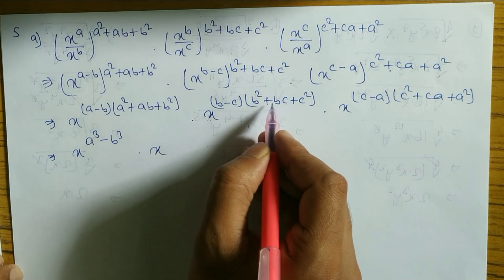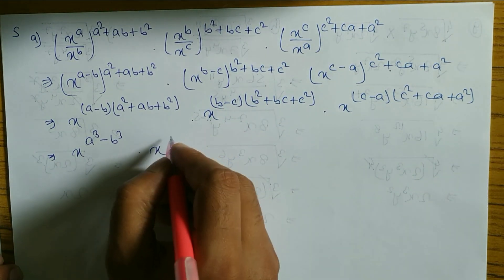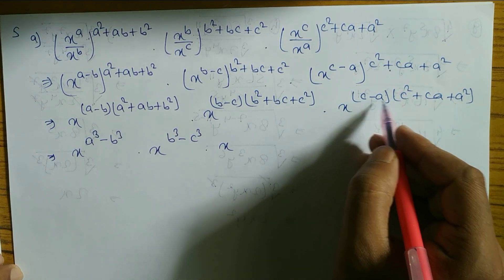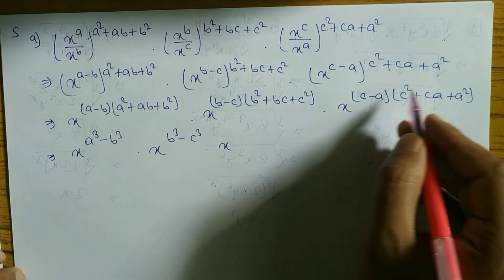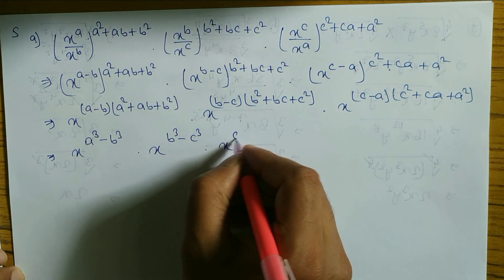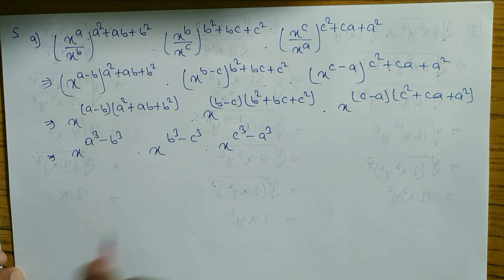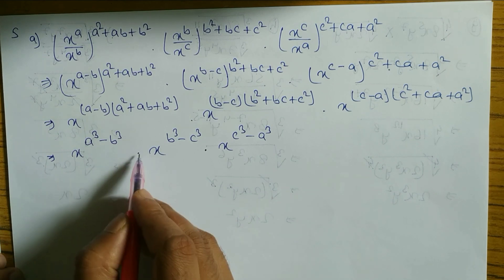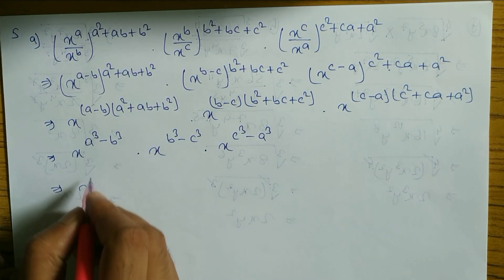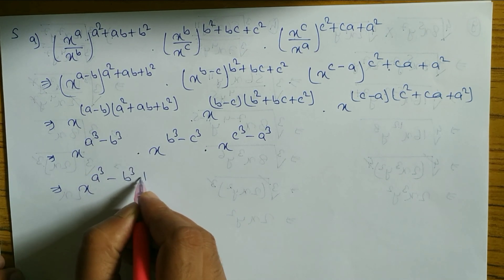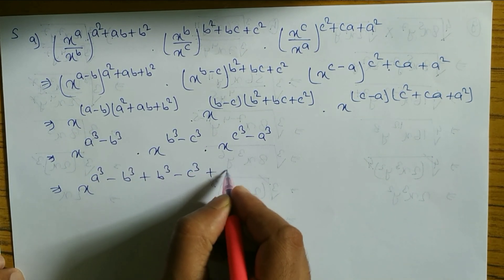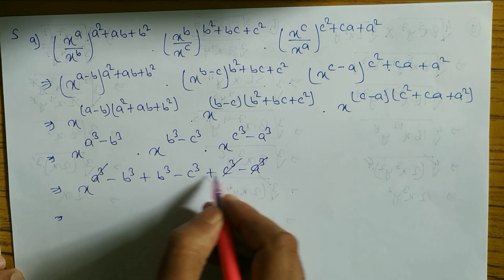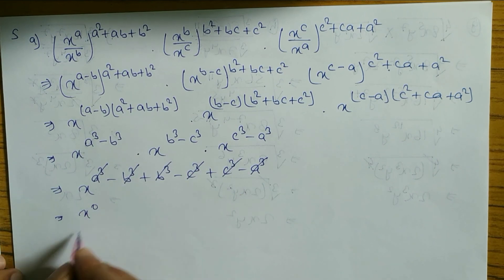Similarly, b minus c times b squared plus bc plus c squared — this is the formula of b cubed minus c cubed. Similarly, x to the power: c minus a times c squared plus ca plus a squared — this is the formula of c cubed minus a cubed, so c cubed minus a cubed. Now you can see that base same again — x, x, x — base same, and in multiplication we have to add the powers. So we can write x to the power: a cubed minus b cubed plus b cubed minus c cubed plus c cubed minus a cubed.